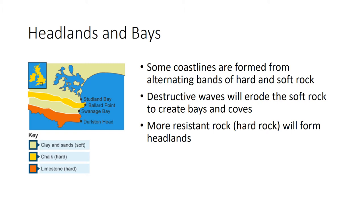We saw that the UK is made up of lots of different types of rock. Where the coastline is formed from alternating bands of hard and soft rock, destructive waves will erode the soft rock to create bays and coves, and the more resistant hard rock will jut out into the sea to form headlands. Here the bays are Swanage Bay and Studland Bay, and the headlands are Durlston Head and Ballard Point.